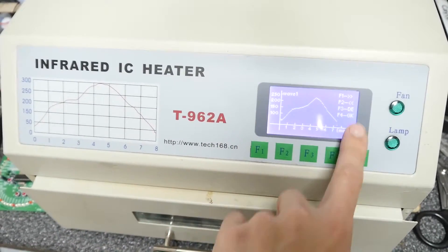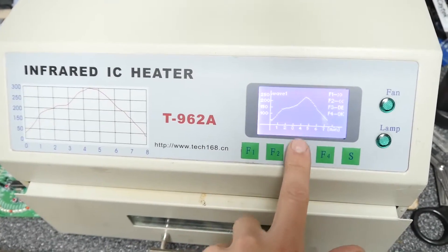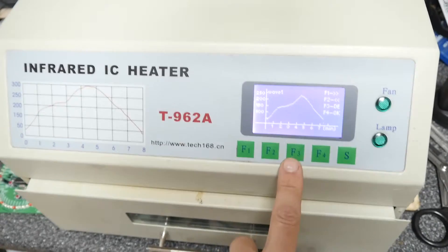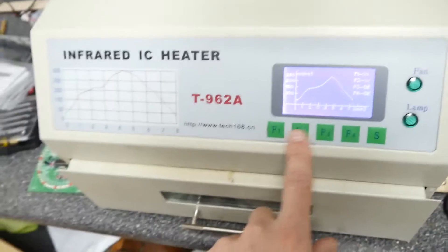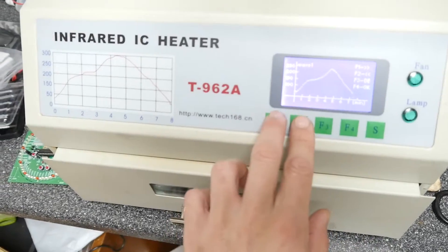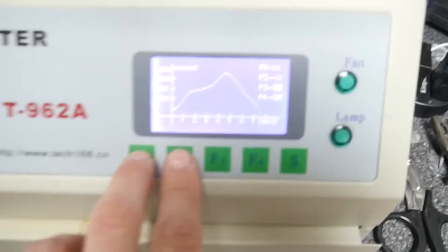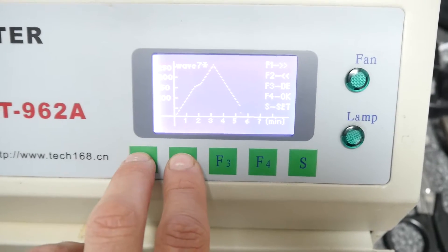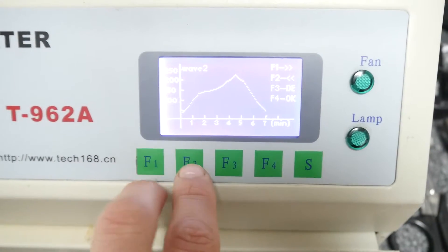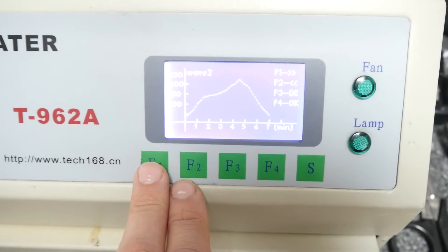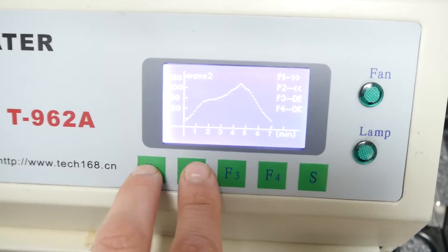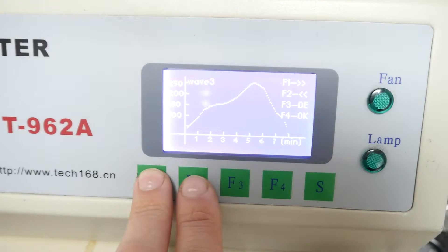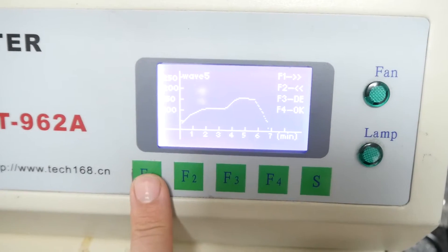So based on the sort of majority of the components on your screen, you can choose the different profiles here. So you just go through them basically bypassing F1 and F2. So just show you those. So at the moment we've got wave one which is pretty much standard profile there. And you can see, oh I just jumped straight through them. Wave two, see a slightly different curve.